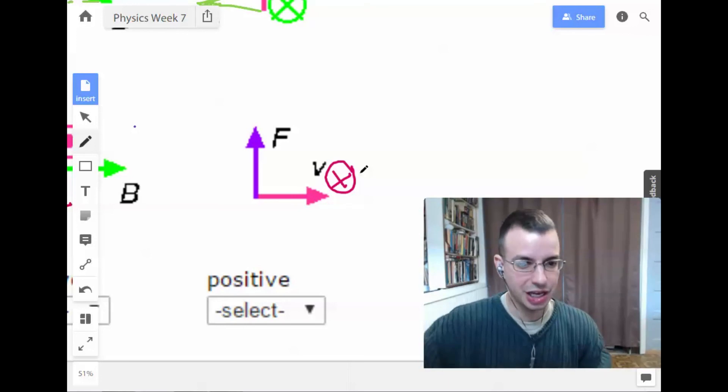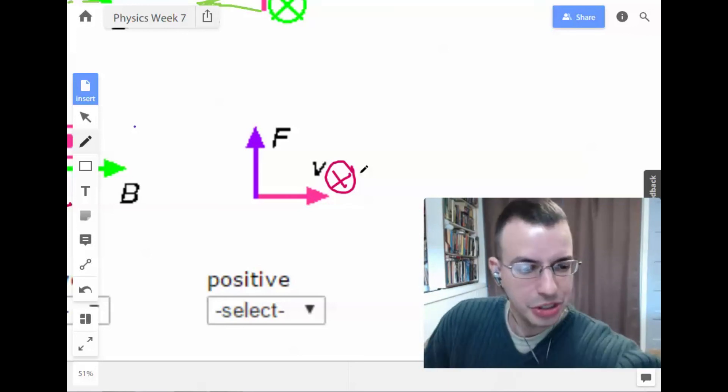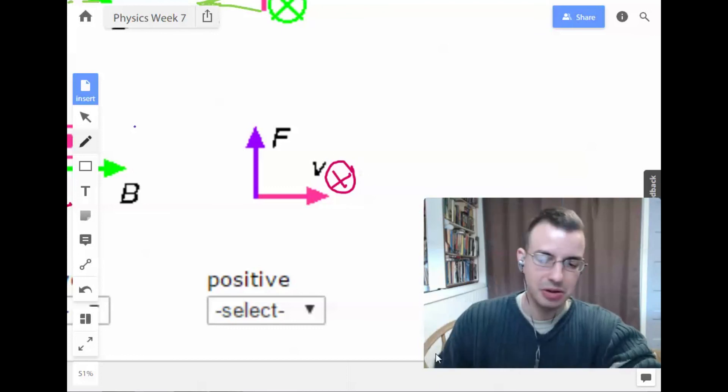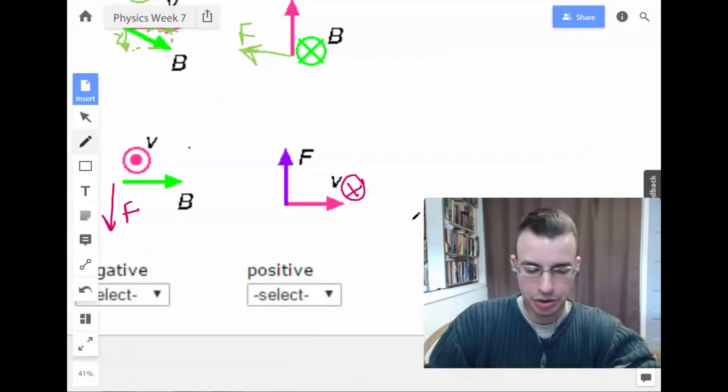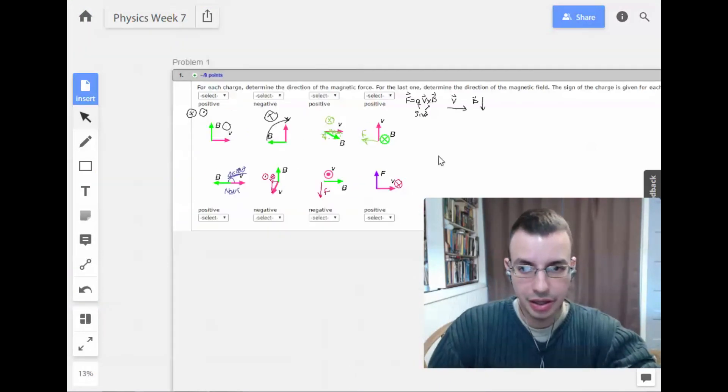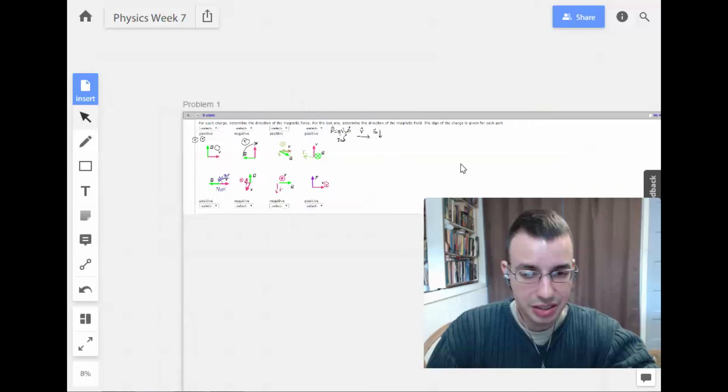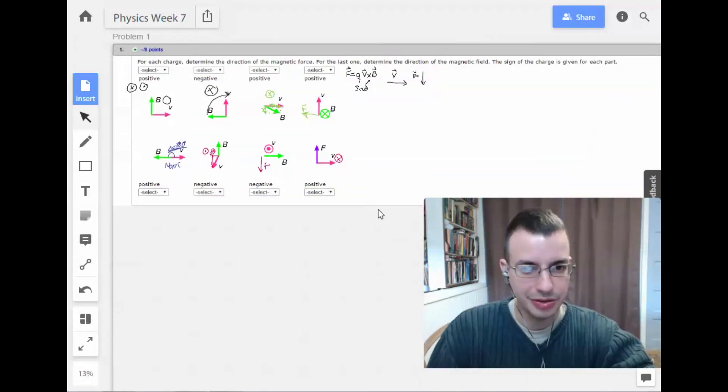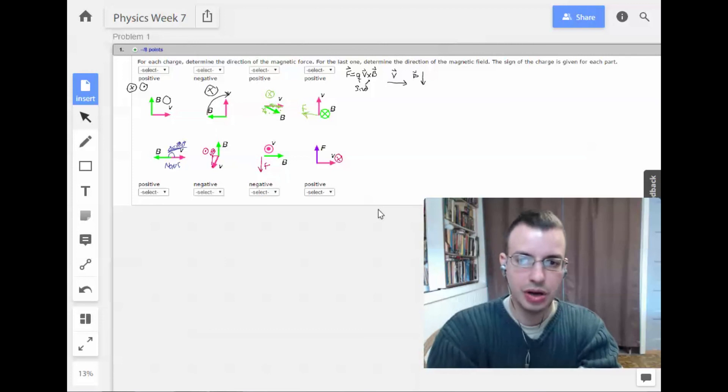It's just quicker than trying to actually logically think through it. You do it six or seven times and you'll kind of become a better guesser. But that's all that you need for that one. And that is your introduction to magnetism in problem one. See you on problem two.